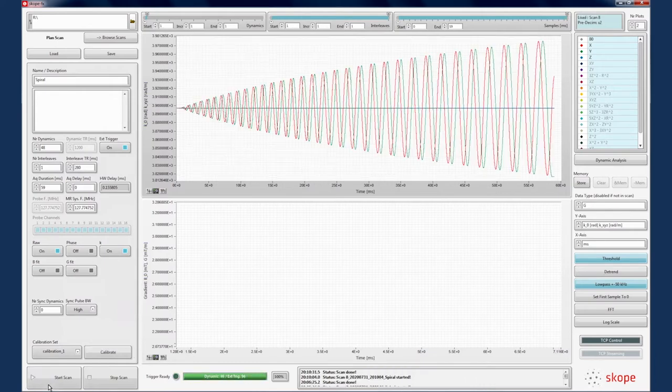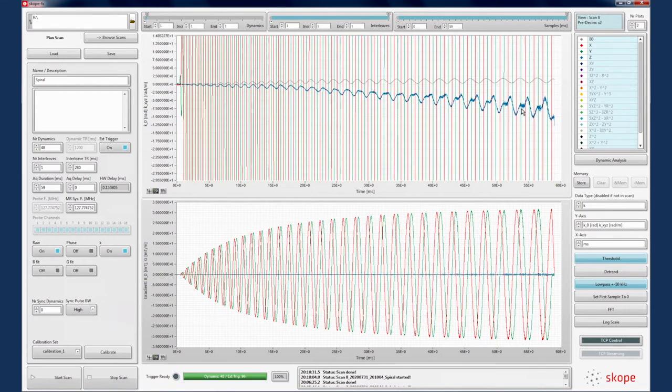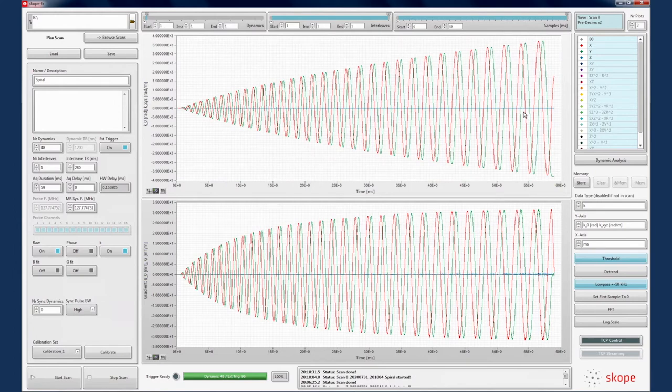Having acquired the spiral, we can see the measured k-space trajectory in the upper plot and the gradient waveform in the lower plot. If we zoom in, we can see unexpected effects in the z-gradient axis and the dynamic b0 term. Further, we can examine higher order field components.